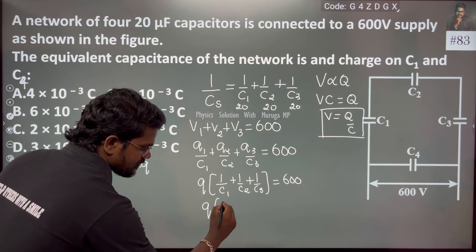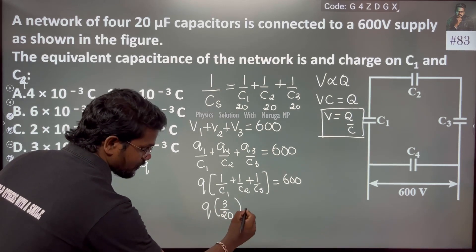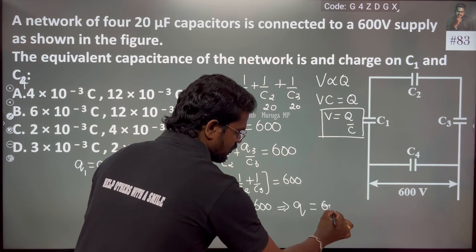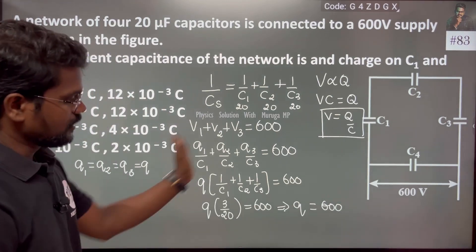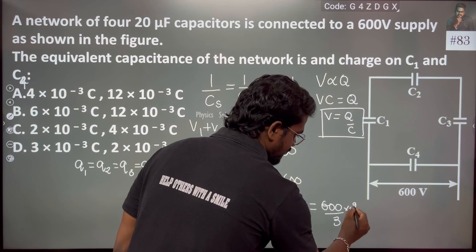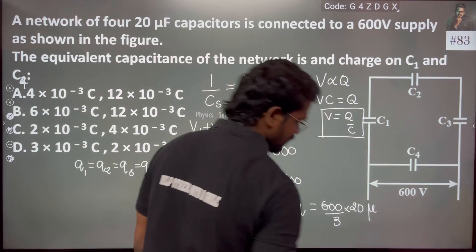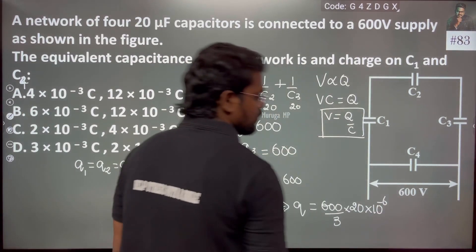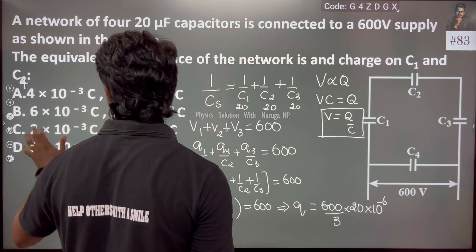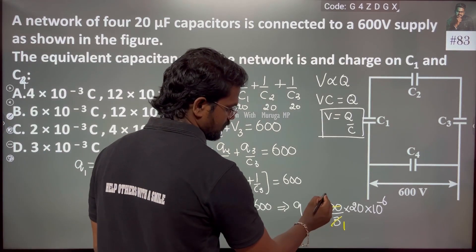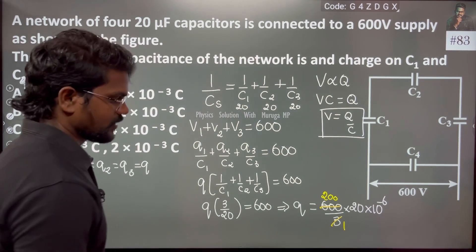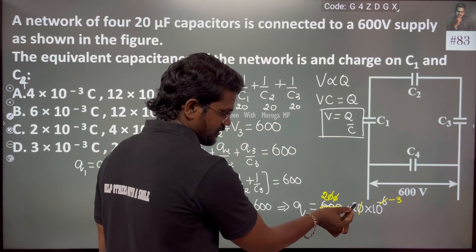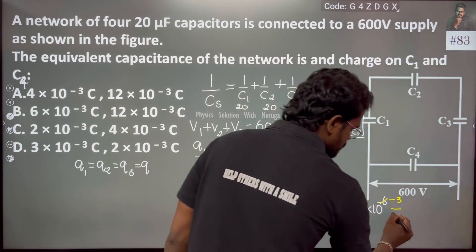I can say q, this is nothing but 3 by 20 microfarad, which is equal to 600. So q equals 600 times 20 divided by 3, times 10 to the power minus 6. When you divide, 3 goes into 600 two hundred times, and 10 to the power minus 6 becomes 10 to the power minus 3, which is nothing but 4.